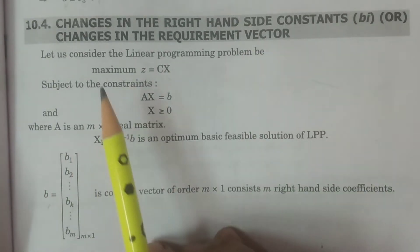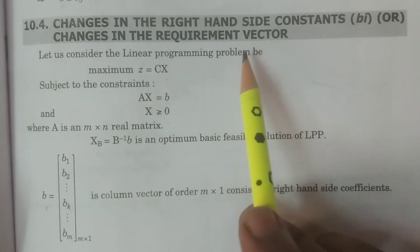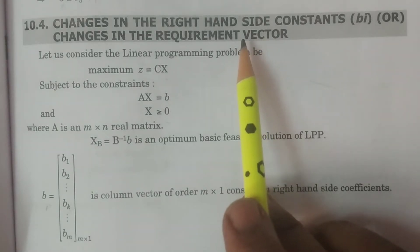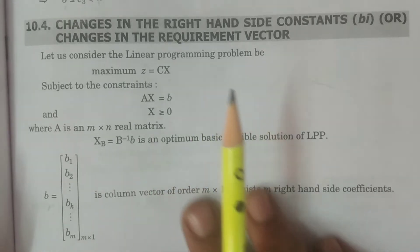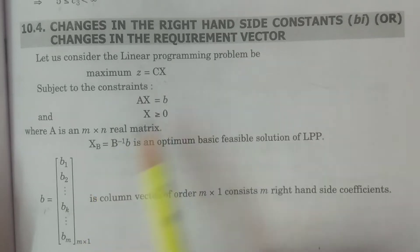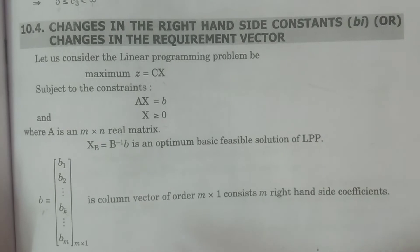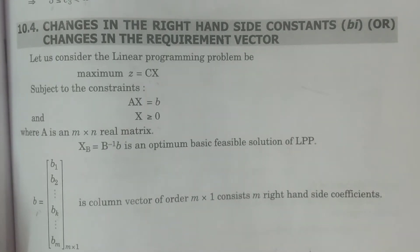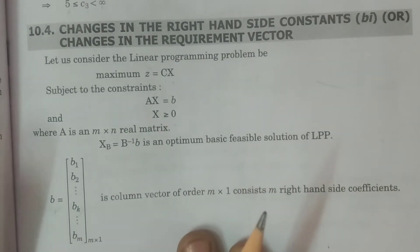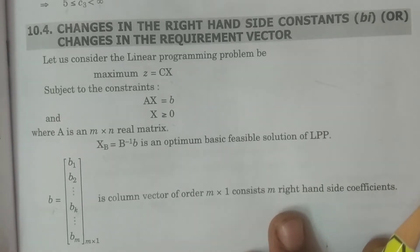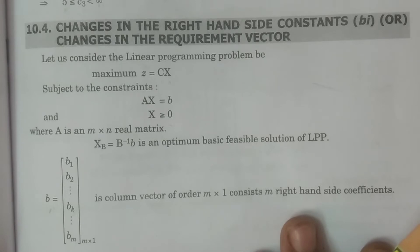In this class, we study changes in the right-hand side constants, that is the requirement vector. Post-optimal analysis can be done by studying these changes. The right-hand side constants are b1, b2, ..., bm, where Ax = b. If there are changes, we examine how to maintain the optimality condition. This is called post-optimal analysis for changes in the requirement vector.